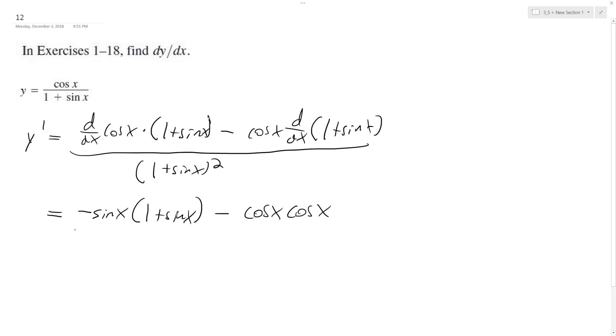Okay, so distributing everything. I'm still not going to write the numerator or the denominator to save space, so we get minus sine x minus sine squared x minus cosine squared x all over 1 plus sine x squared.